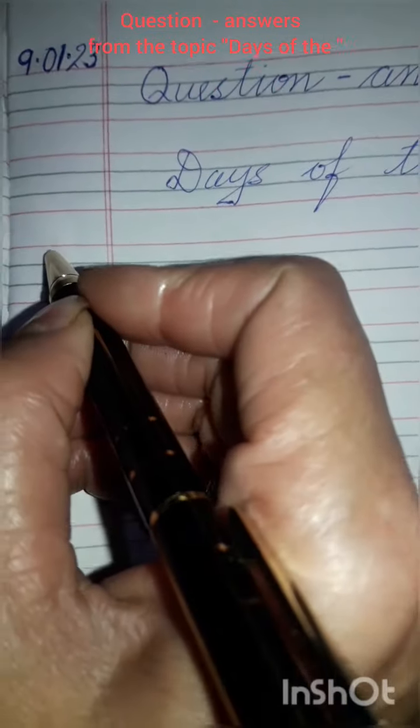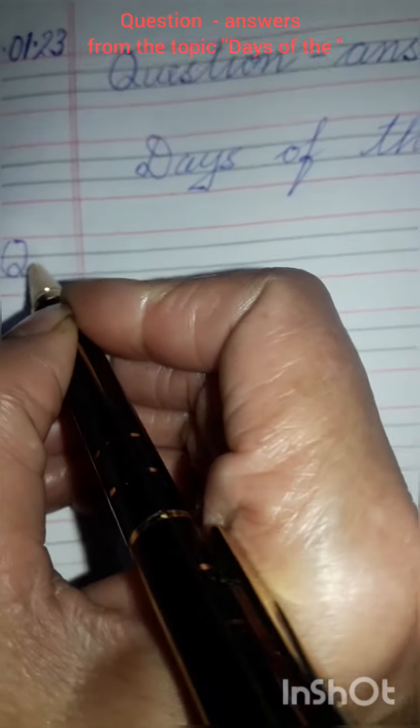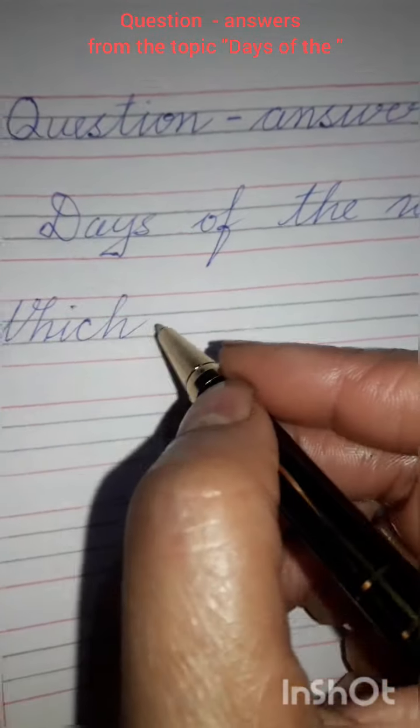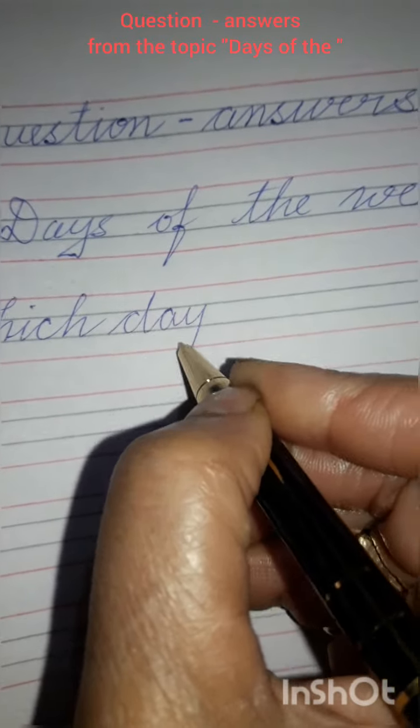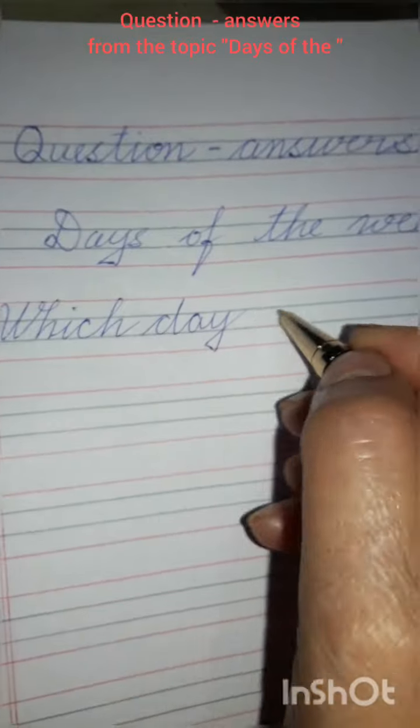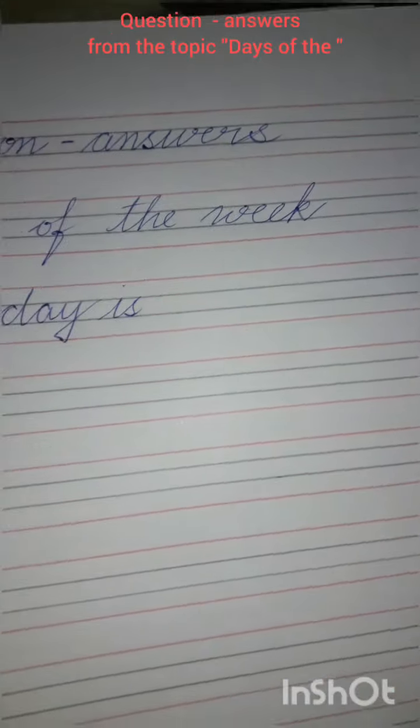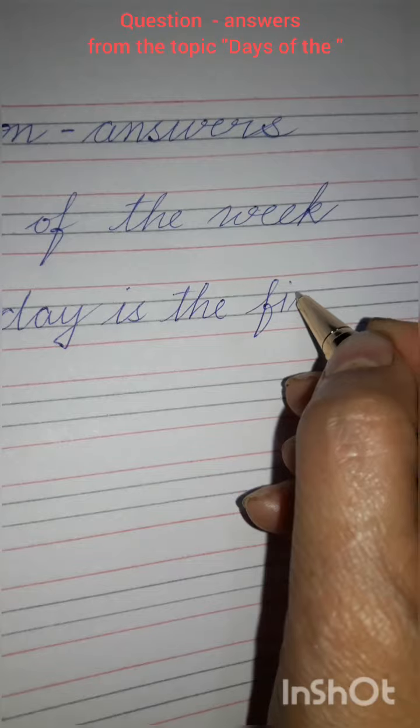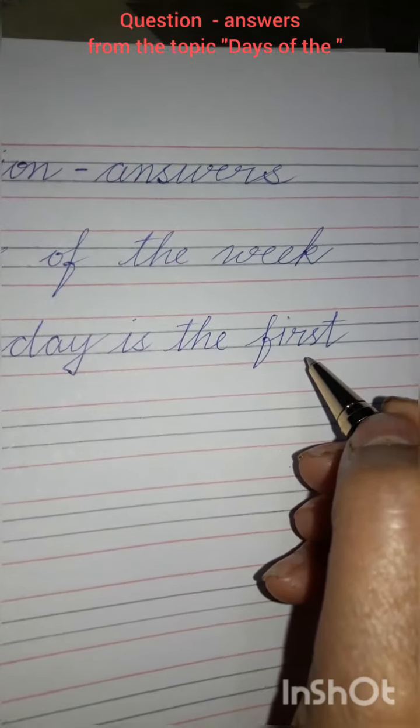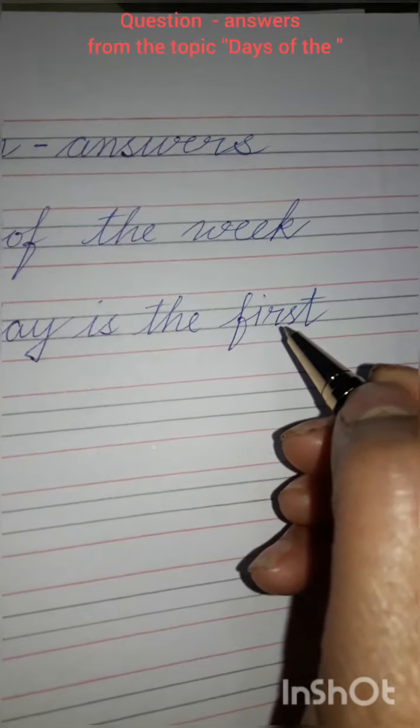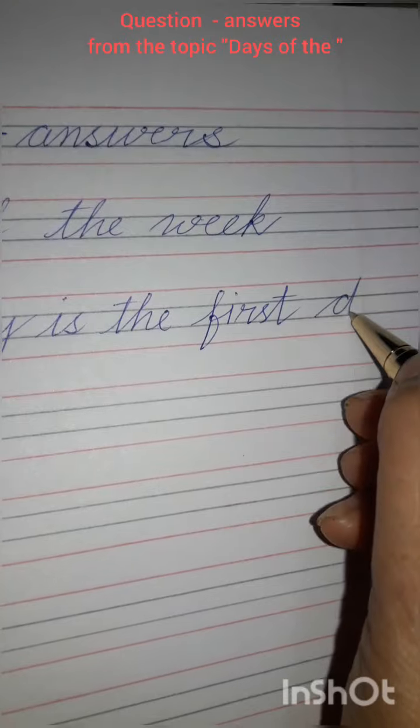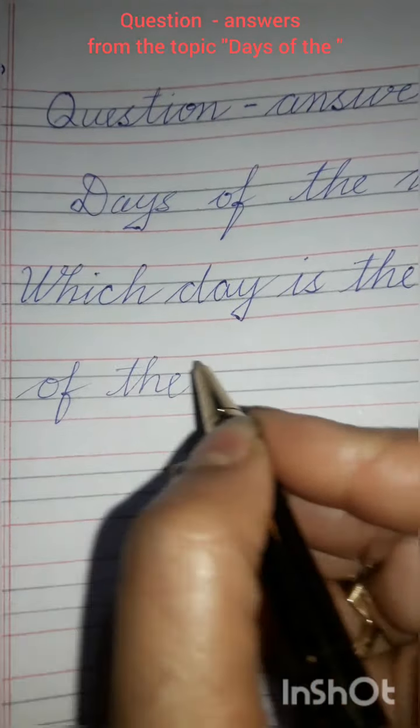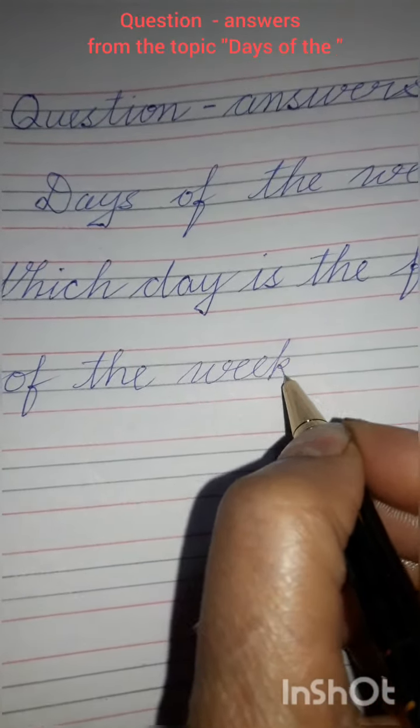Inside the margin line you will write down the short form of question and that will be Q and put a dash here and write down 1. So first question is which day is W-H-I-C-H which, D-A-Y day, I-S is, T-H-E the, F-I-R-S-T first. See I am using ordinal number spelling here first. Which day is the first day of the week?